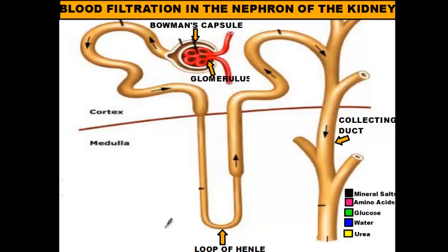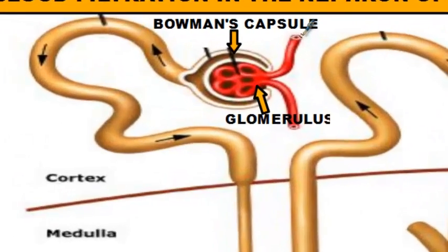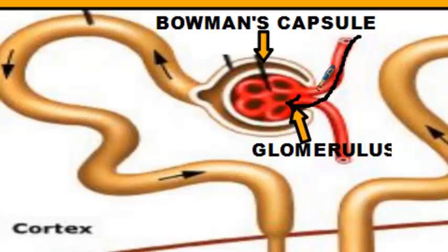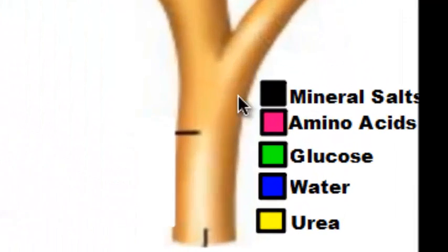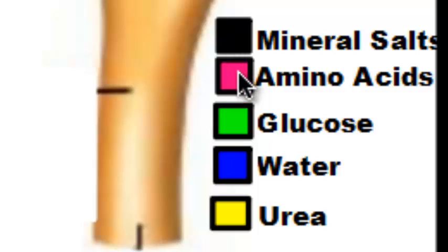What happens in your nephron is this: blood gets pumped into your kidney and makes its way to your nephrons. The blood moves through the glomerulus at a fast rate because it's being pumped by your heart with a lot of pressure. As a result, a lot of the nutrients and molecules in your blood get forced out into the Bowman's capsule. The only things not forced out are blood cells and proteins, because proteins are long chains of amino acids too big to fit through the cell openings. The materials forced into Bowman's capsule include mineral salts, amino acids, glucose, water, and urea.